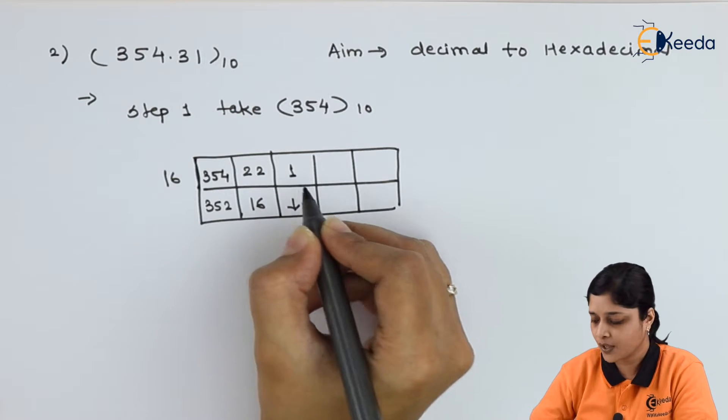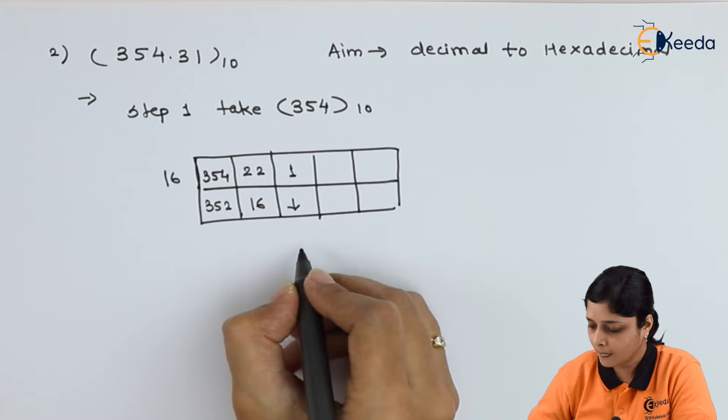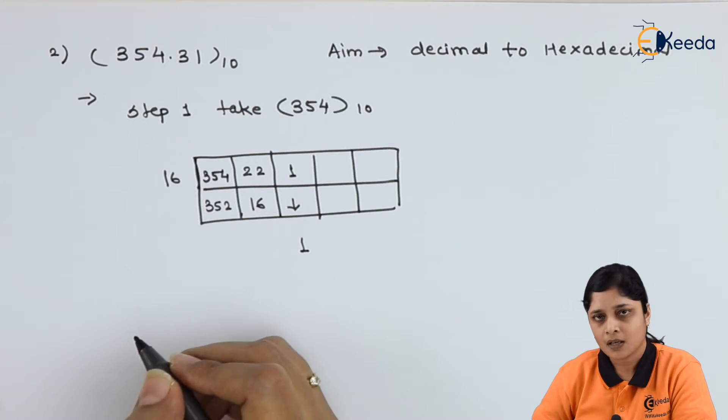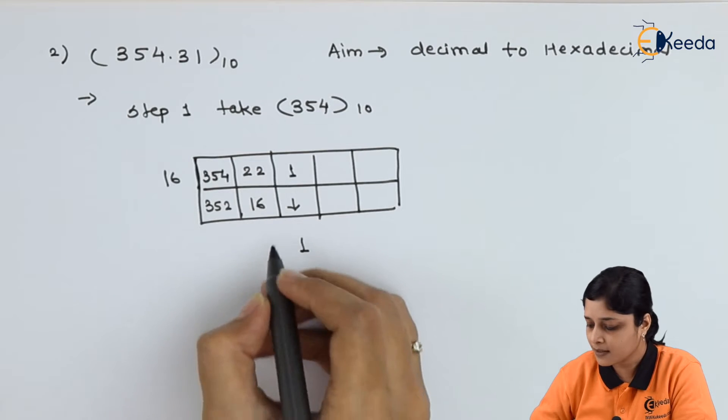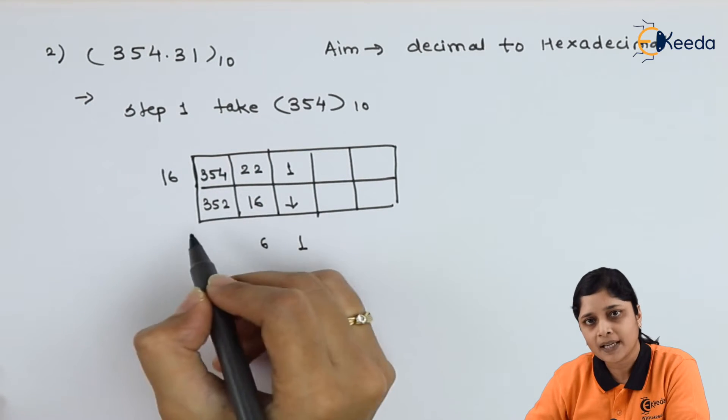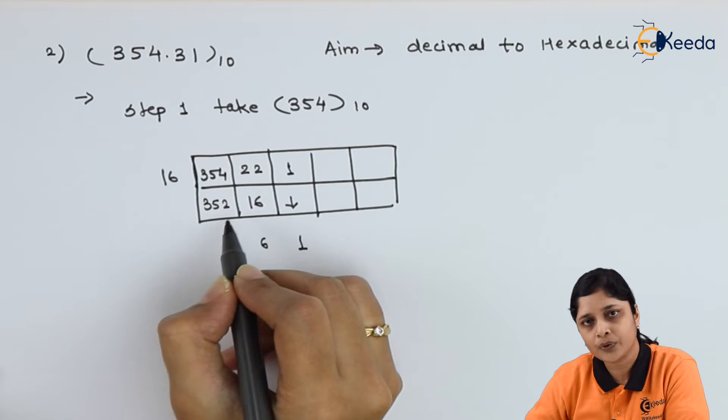Here you get 1. That's why you have to stop here. Then write down the remainder. 1 subtraction: 22 minus 16 will give you 6. 354 minus 352 will give you 2.